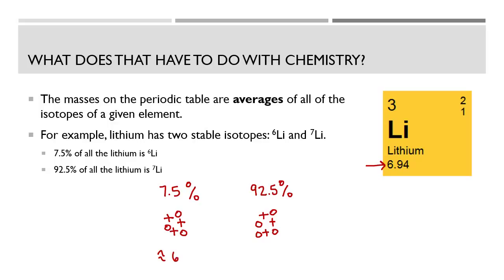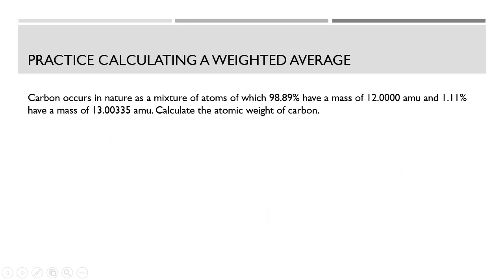Lithium-6 has a mass of about 6 AMU and lithium-7 has a mass of about 7 AMU. The atomic mass on the periodic table is 6.94, which is very close to 7. The reason it's close to 7 is because 92.5% of lithium is lithium-7. The rest is a little lighter at 6 AMU, and that lighter isotope pulls the average down slightly to 6.94.